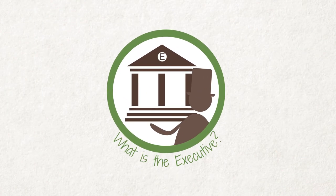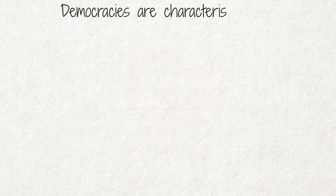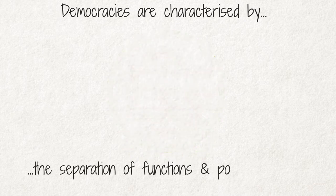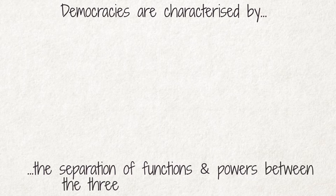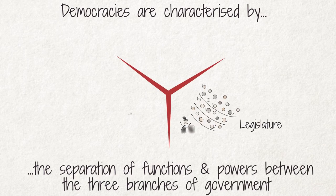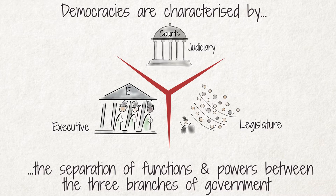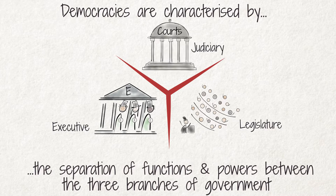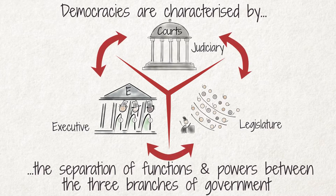In this video, we look at the executive branch of government, its responsibility and tasks. Democracies are characterized by the separation of functions and powers between the three branches of government: the legislature, the executive, and the judiciary. Each branch checks the power of the other two so that there is a balance of power between them.